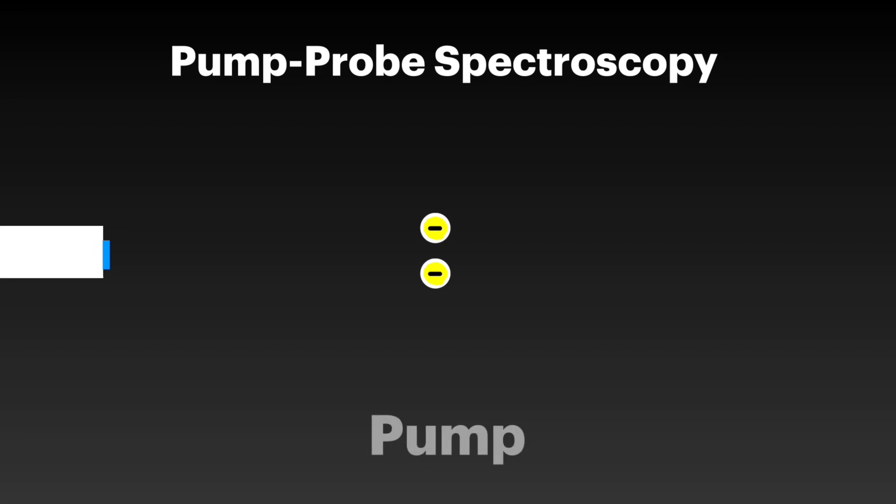The first part of this technique, the pump, is where a stronger laser is used to excite the electrons, causing them to move or oscillate, which is the motion that is going to be videoed.